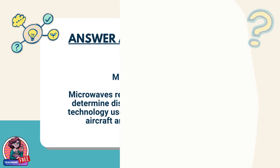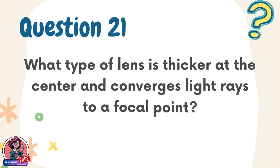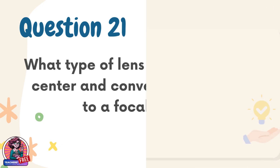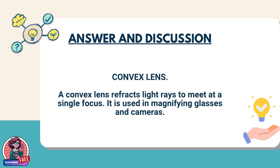Question 21. What type of lens is thicker at the center and converges light rays to a focal point? Answer: convex lens. A convex lens refracts light rays to meet at a single focus. It is used in magnifying glasses and cameras.